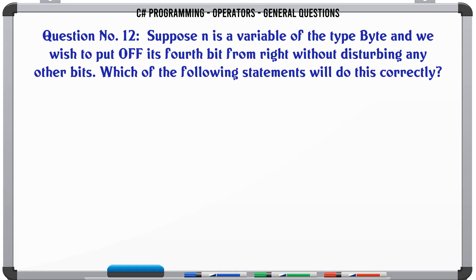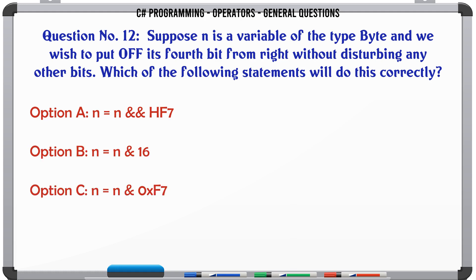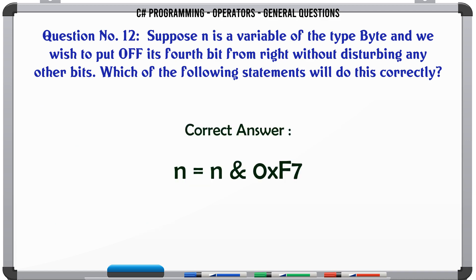Suppose n is a variable of type byte and we wish to put off its 4th bit from the right without disturbing any other bits. Which of the following statements will do this correctly? A: N = N & HF7. B: N = N & 16. C: N = N & 0xF7. D: N = N | 0xF7. The correct answer is N = N & 0xF7.